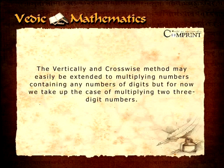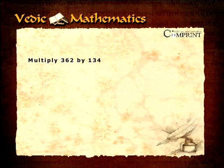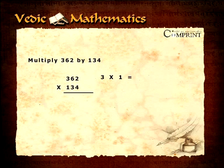The vertically and crosswise method may easily be extended to multiplying numbers containing any number of digits. For now we take up the case of multiplying two three digit numbers. Let's take multiply 362 by 134. Starting from the left the first answer digit is 3 multiplied by 1 which equals 3. The next answer digit is the sum of the cross product of the four left hand most digits, that is 3 multiplied by 3 plus 6 multiplied by 1 equals 15.